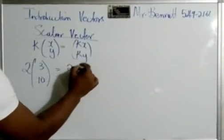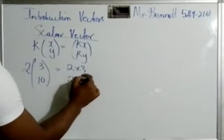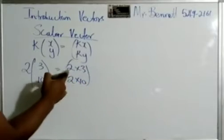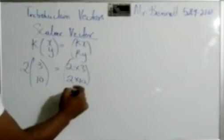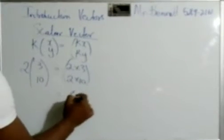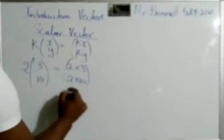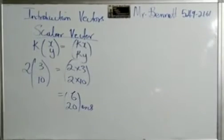So this is (3, 10). It will be the same thing as 2 times (3, 10), which is 2 times 3, 2 times 10, where k is the constant, right? So it will be 2 times 3 is 6, 2 times 10 is 20. And we are finished. It is as easy as that.